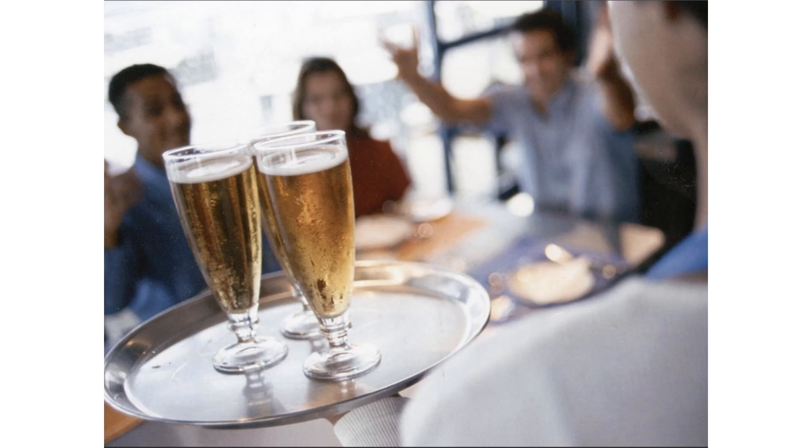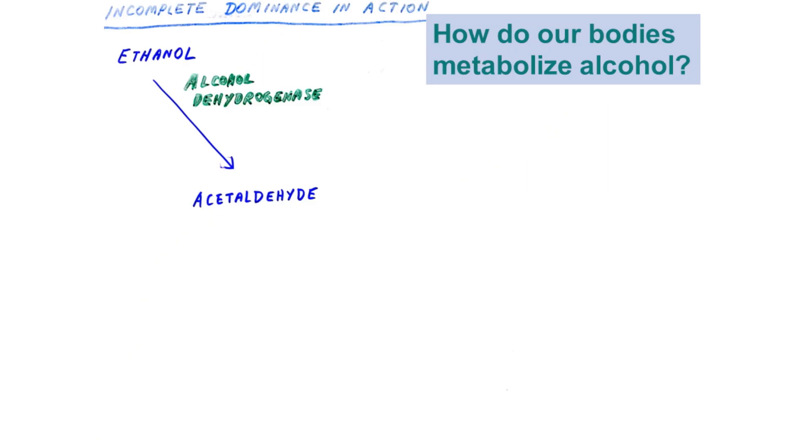Many traits in humans and other organisms turn out to be inherited in the same fashion — there's some amount you get, and the more copies of the gene you have, one dose versus two dose, the more you show it in the phenotype. Here's a human example involving metabolizing alcohol. When a human consumes alcohol — whether beer, wine, or something else — the molecule is ethanol. It gets into your digestive tract, gets absorbed into your bloodstream, and your body breaks it down in a two-step process: ethanol is converted into acetaldehyde by alcohol dehydrogenase, and then acetaldehyde is converted into acetic acid by aldehyde dehydrogenase.